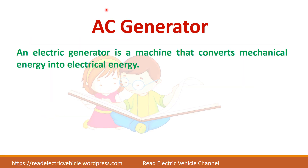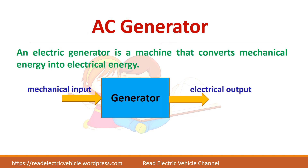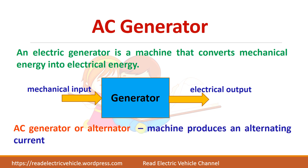What is an AC generator? We know an electric generator is a machine that converts mechanical energy into electrical energy. We have already seen about DC generators, which give a DC output. An AC generator, or alternator, is a machine which produces an alternating current.